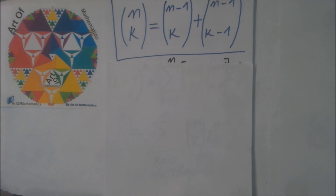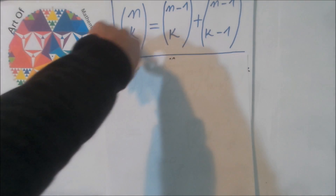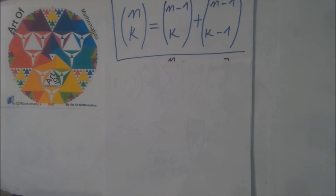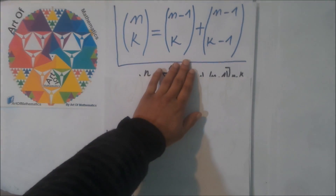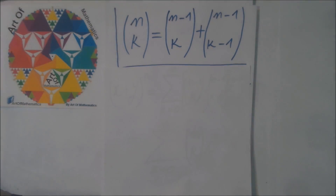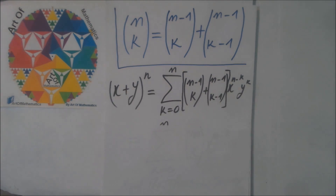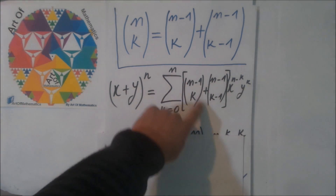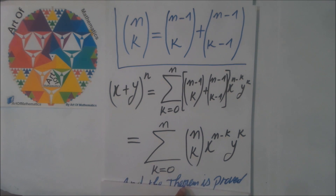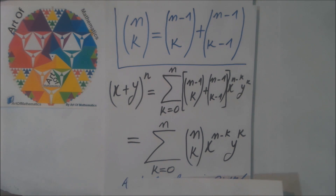Finally, we have this sum here. I want to recall that this expression — which we know from Pascal's identity — we use it here. So finally we get our theorem proved. Thank you.